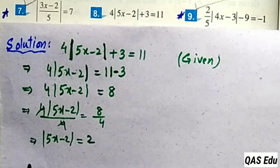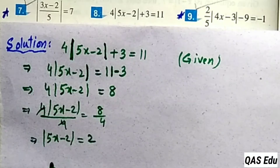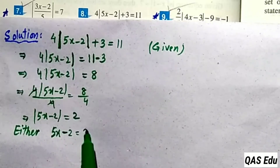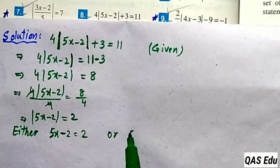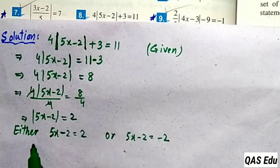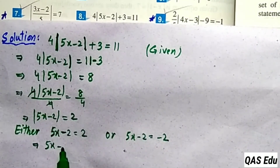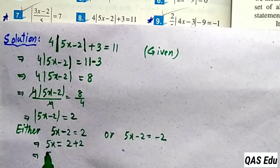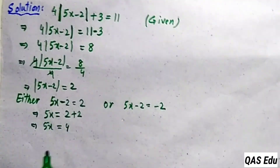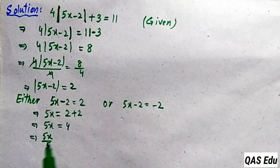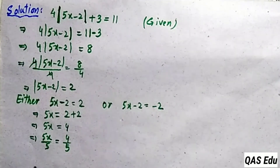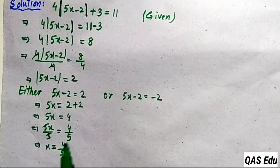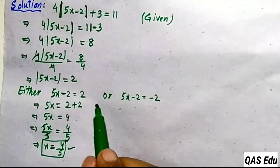This completes question 7. We now have two possibilities: either 5x minus 2 equals plus 2 or 5x minus 2 equals minus 2. For the first: move minus 2 to the right as plus 2. So 5x equals 4. Dividing both sides by 5: x equals 4 over 5. There is no common factor to simplify.